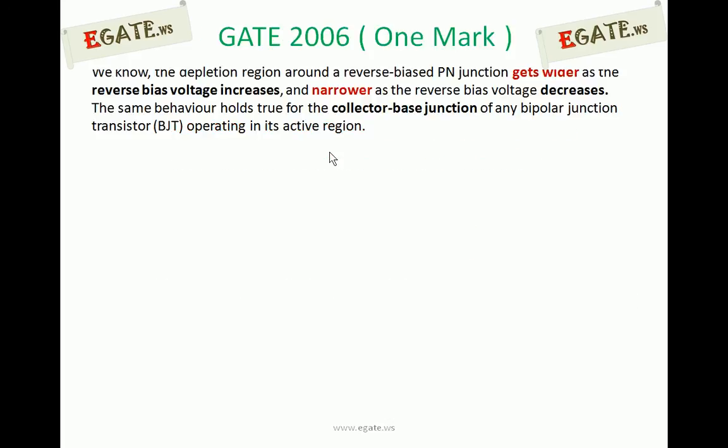Early effect is also called base width modulation. Before going to discuss about early effect, we will recall one important point. We know that the depletion region around a reverse-biased PN junction gets wider as the reverse bias voltage increases, and gets narrower as the reverse bias voltage decreases.